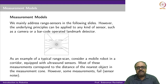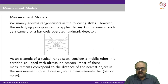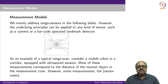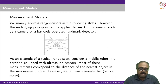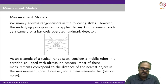The measurement model tells you the probability of Zt given Xt comma m. In the next few slides, I will look at one specific kind of sensor and develop a measurement model for that sensor. We are going to look at range sensors, but the principles I discuss can apply to other kinds of sensors as well, whether a camera sensor or a barcode-operated landmark detector.